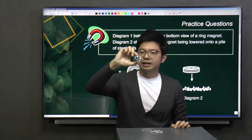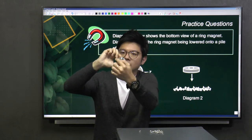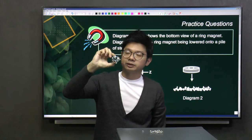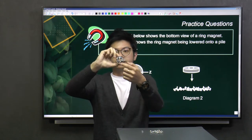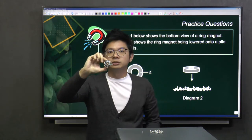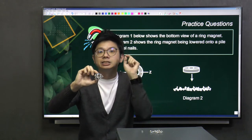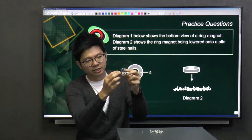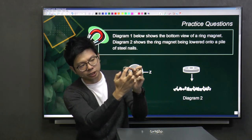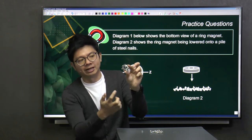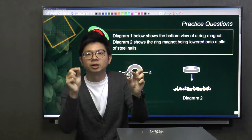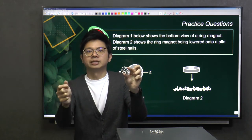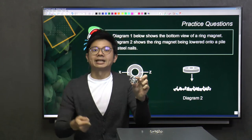Can you see that it attracts a lot of steel nails? And if you can see, the distribution of the steel nails, they are quite evenly distributed. So evenly distributed means that each part or each position on the face of this ring magnet attracted the same number of steel nails and they have the same magnetic strength.